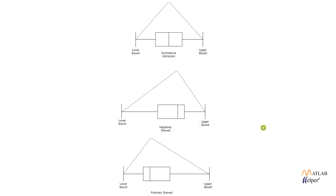Whisker length decides the type of data distribution: symmetrical whiskers mean symmetrically distributed data; longer left whisker means negatively skewed; longer right whisker means positively skewed. This concludes graphical representation. In this video we have seen how exploratory data analysis helps us know about our data and build an optimized ML model. In the upcoming videos we will analyze each EDA purpose in MATLAB using two datasets — a simple dataset for central tendency and a consistent dataset for the remaining purposes.